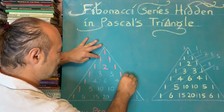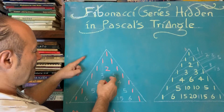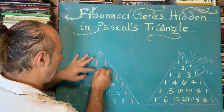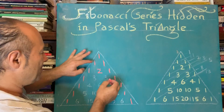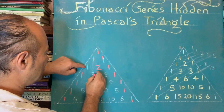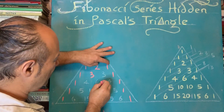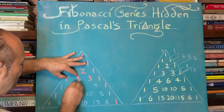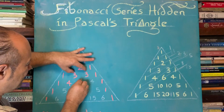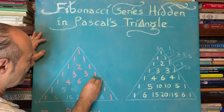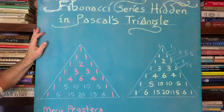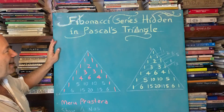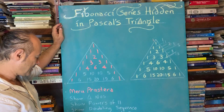What we're doing is adding the two numbers that are directly above each number. So here we have one and two make three, two and one make three as well. Then one and three make four, three and three make six, and three and one make four. This is a beautiful triangle - we call it Pascal's Triangle. Blaise Pascal was born around 1623.